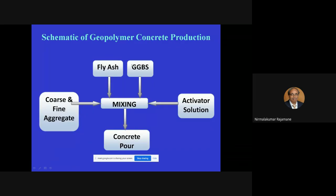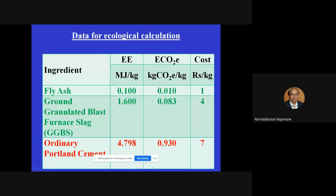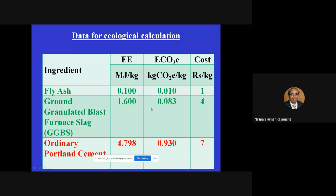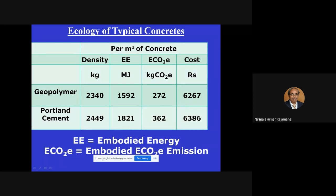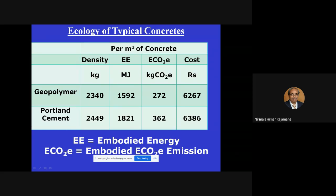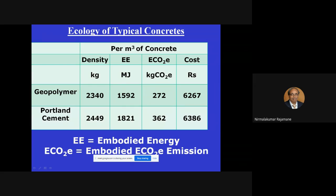Generally geopolymer uses fly ash and GGBS, but it can include more. The solution is added and geopolymer concrete is mixed and poured. Embodied energy and CO₂ emission values for all constituent materials are available in the literature, so we can always calculate. One comparison showed geopolymer concrete with lower CO₂ emission, slightly lower cost, and less embodied energy than an OPC mix. Even compared to fly ash concrete, geopolymer is still better in embodied energy and carbon footprint.